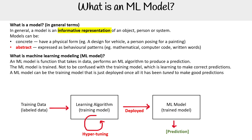From here, you could then provide it unlabeled data, because its goal is to make predictions — and that could be labeling data or doing other things. We call the interaction with the deployed machine learning model inference. When you are inferring something, you are providing data and saying, can you make a prediction for me? And that's what inference is.